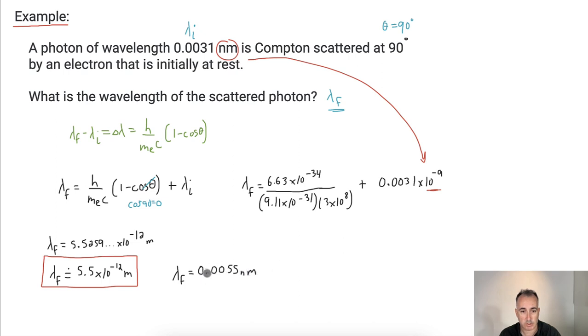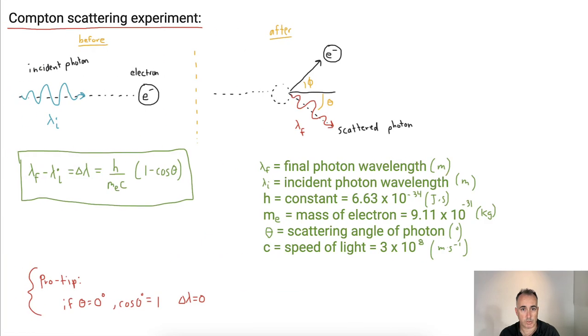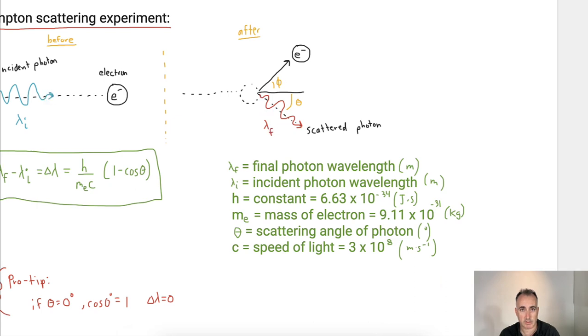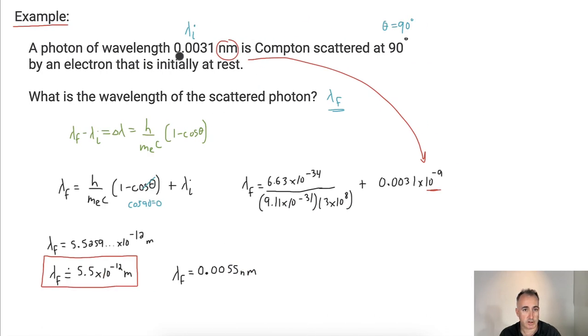So what happens then, do you notice, just to be safe here, it's good to notice. The wavelength is always supposed to increase. So did the wavelength really go from a smaller value to a larger value? It better, and it really did look. It started off at 0.0031 nanometers and now it went to 0.0055 nanometers. So yes, it increased, so at least that's good, conceptually speaking.